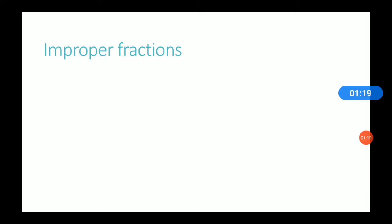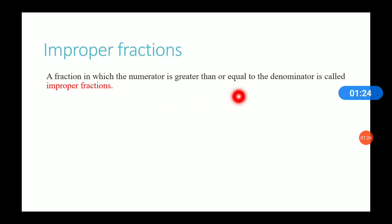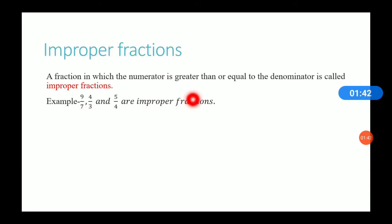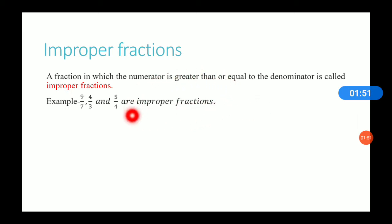There is another type of fraction — improper fractions. In improper fractions, the numerator is greater than or equal to the denominator. For example, 9/7, 4/3, 5/4 — in all these fractions the numerator is greater than the denominator. Sometimes it may happen that the numerator is equal to the denominator, for example 3/3 or 4/4. These types of fractions are also known as improper fractions.